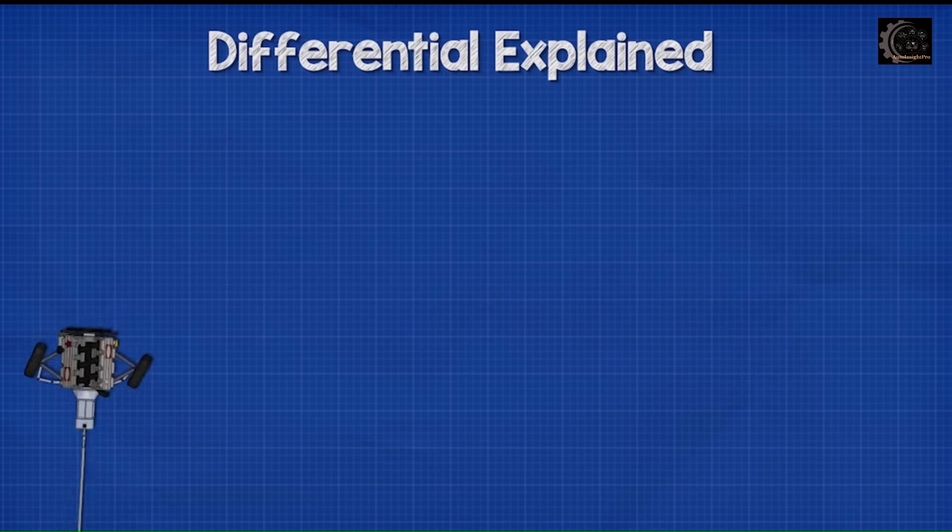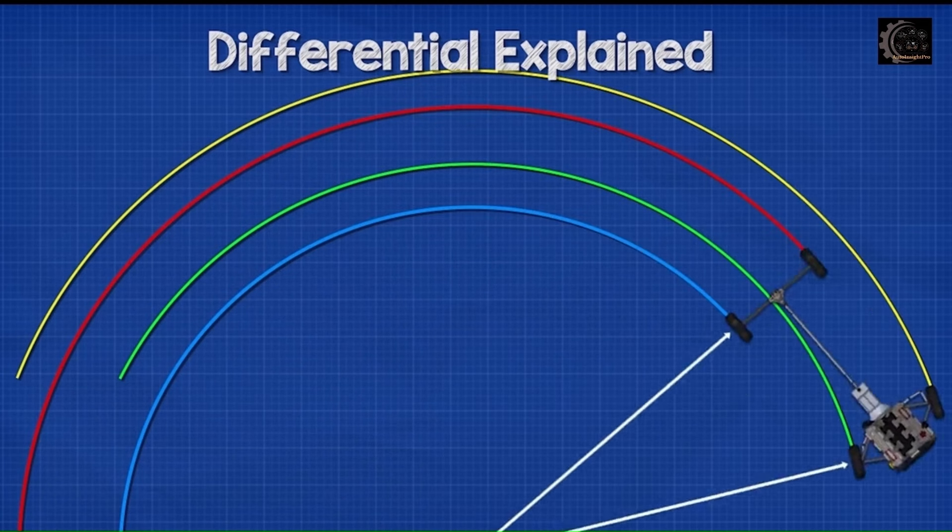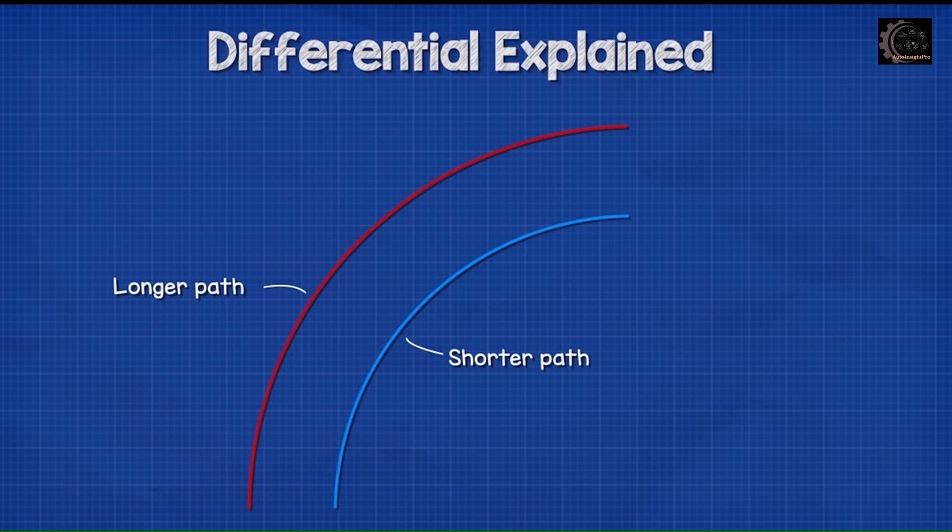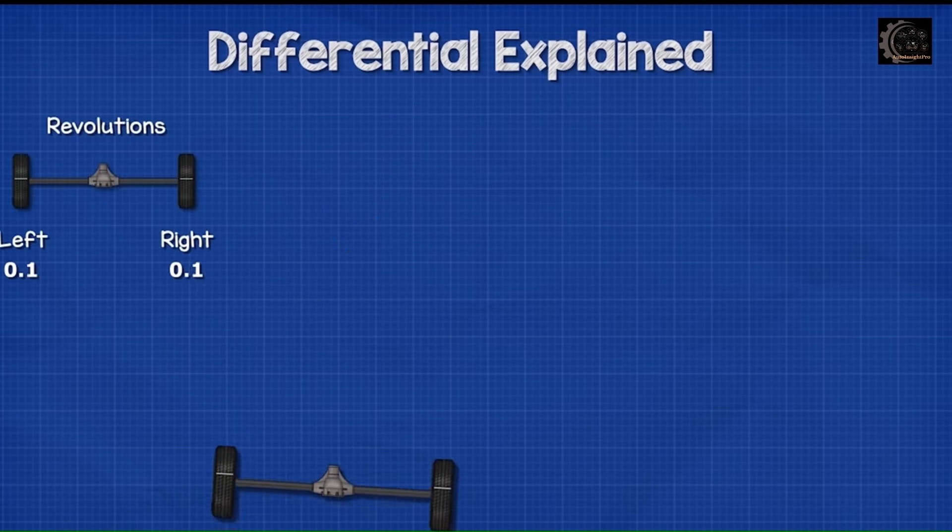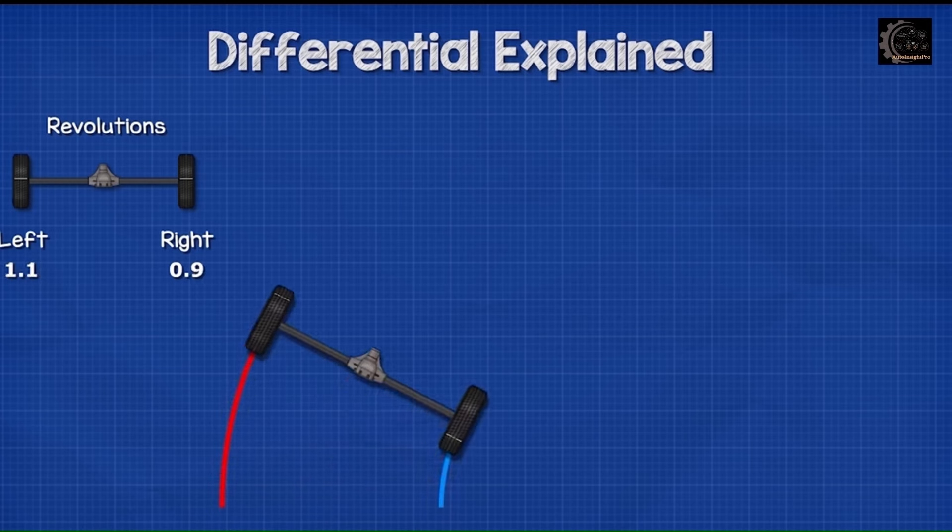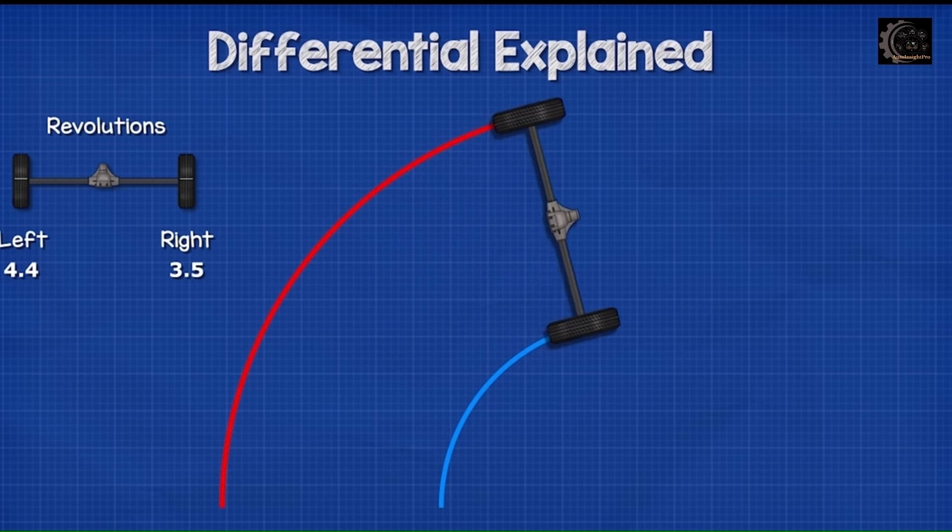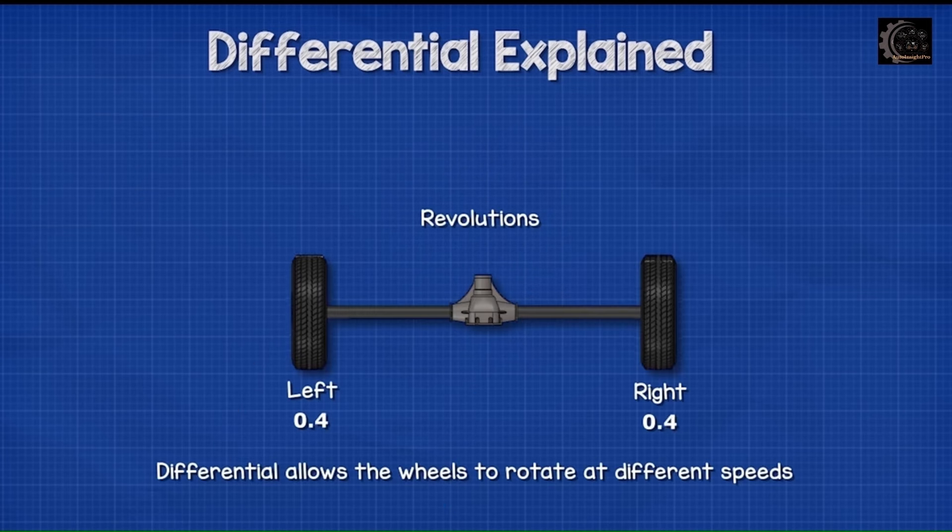However, when a car turns, the front two wheels change direction, but the rear wheels remain in position. The wheels are now following different length paths. The inner path is shorter than the outer path. So the outer wheels must cover a longer distance in the same amount of time, and that means they need to rotate faster. So the rear wheels need to turn at different speeds. The differential allows the wheels to rotate at different speeds.